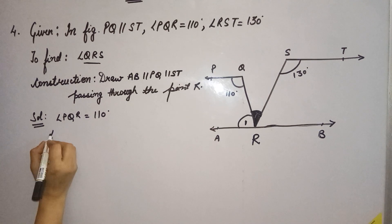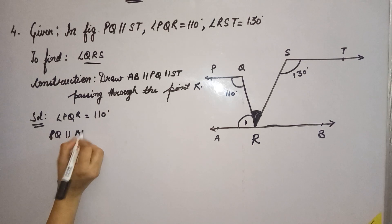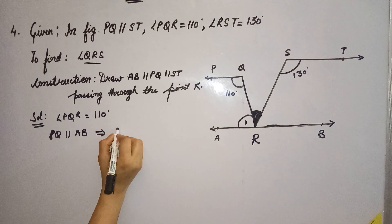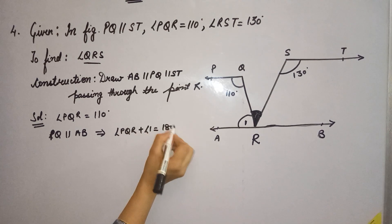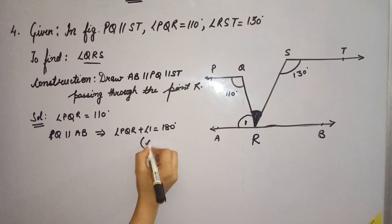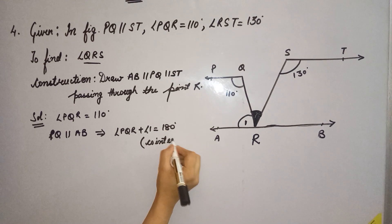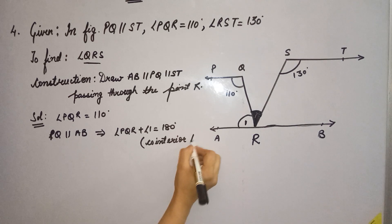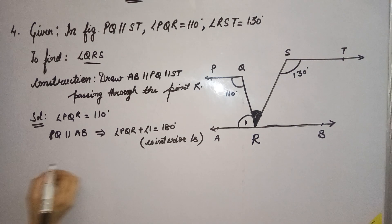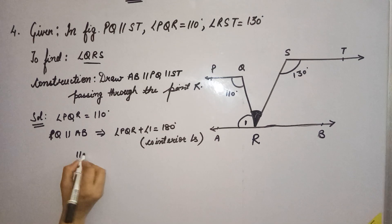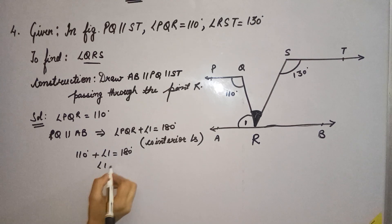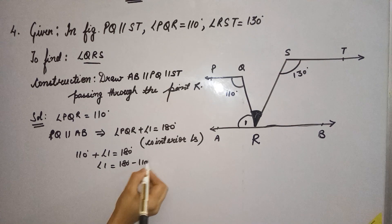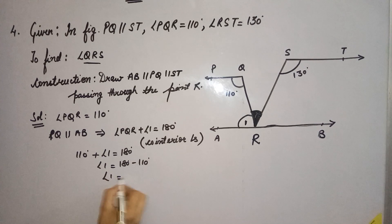Since PQ is parallel to line AB, angle PQR plus angle 1 is equal to 180 degrees due to co-interior angles. So PQR is 110 degrees. We can calculate angle 1. So we get angle 1 equals 180 minus 110, that is 70 degrees.